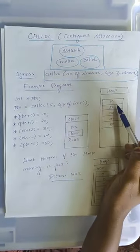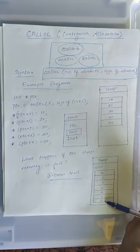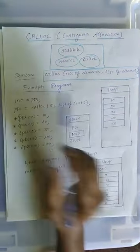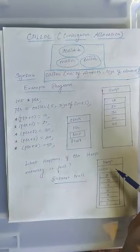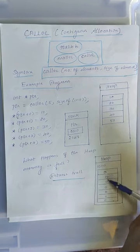Each of every block is initialized to value 0. In MALLOC, the initial value is garbage value but in CALLOC, the initial value will be 0.